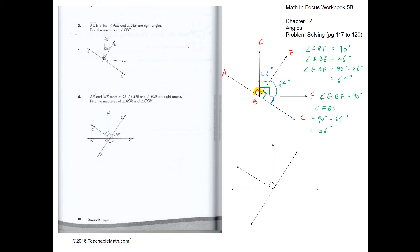Now let's look at Question 4. We have angles W, X, A, B, Y, C. This is a right angle and this is also a right angle. We have to find angle AOX and angle COY. We are given this angle as 56 degrees. To solve for angle AOX, it will be 180 minus 56, because the angle is on a straight line, giving us 124 degrees.